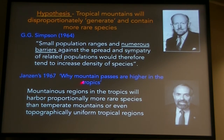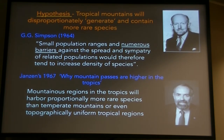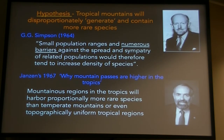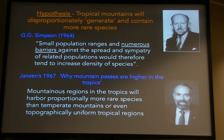Building on Janzen's 'why mountain passes are higher in the tropics,' the statement from Simpson is that mountainous regions in the tropics will harbor proportionally more rare species than temperate mountains or even topographically uniform tropical regions. The emphasis is that tropical mountains in particular will be a major engine in generating variation and diversity through rarity.